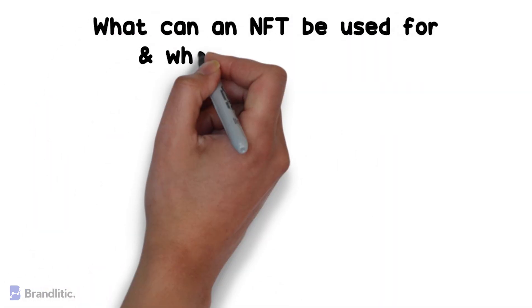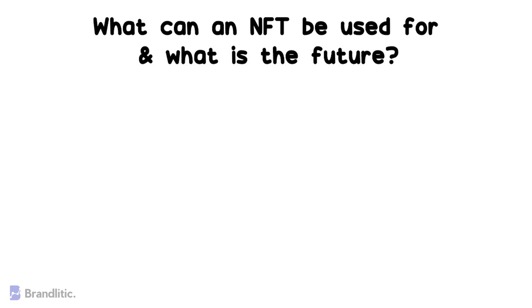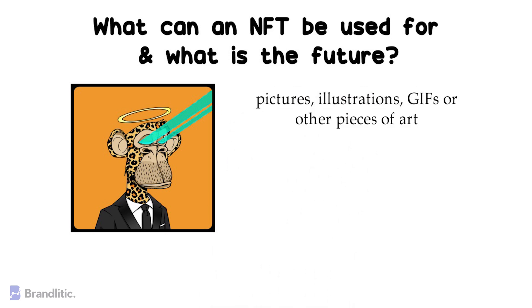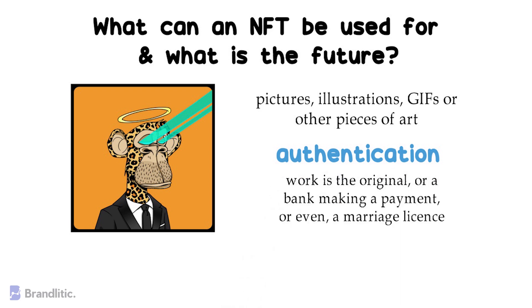Next: what can an NFT be used for and what is the future? Right now, most of the examples we see on the internet are art NFTs — pictures, illustrations, GIFs, or other pieces of art. But the real power of NFTs is authentication. In the traditional world, we use all kinds of intermediaries to authenticate any form of information or transaction — whether you're an artist verifying your work is original, a bank making a payment, or even a marriage license. All these situations need a third party to declare their authenticity. And if you think about it, everything in our economy that is transaction-based can be linked with an equivalent NFT use case.